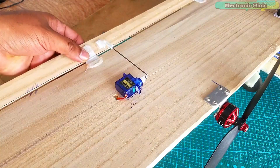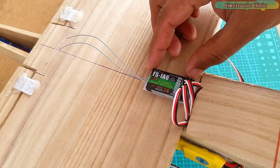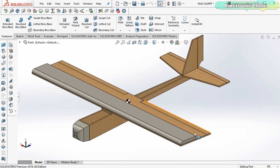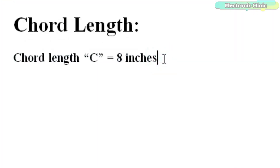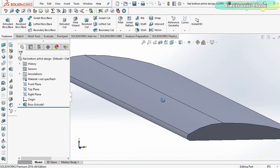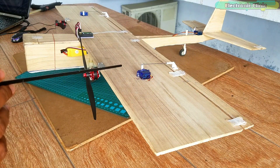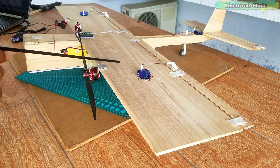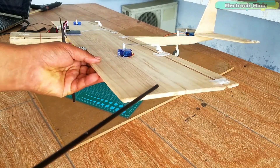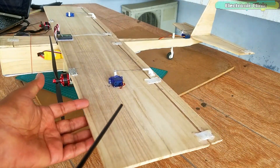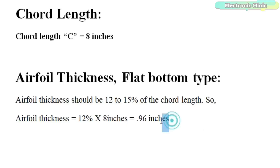The components and tools used in this video can be purchased from Amazon — purchase links are given in the description. While designing an RC plane we usually start by fixing the chord length or the wingspan. Let's fix the chord length: C equals 8 inches. The airfoil thickness should be 12 to 15 percent of the chord length, so airfoil thickness equals 12% times 8 inches, which is equal to 0.96 inches. I didn't add an airfoil on purpose — I want to check what happens when the airfoil is not added, and then I will add it after initial tests.